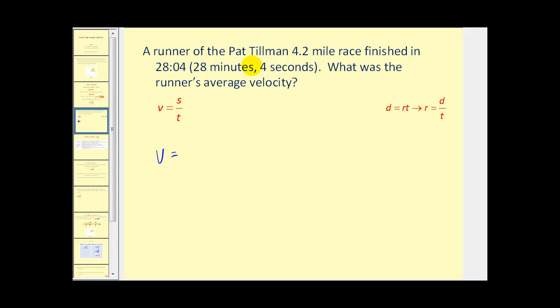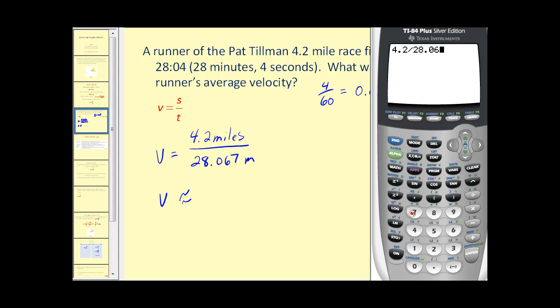The distance is 4.2 miles. The time is a mix of minutes and seconds. We need to convert these seconds into minutes. Four seconds is 4 sixtieths of a minute which equals as a decimal 0.06 repeating. So we'll use for our time 28.067 minutes. Let's divide and find our average velocity.